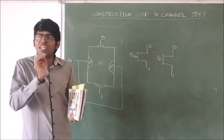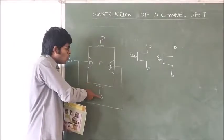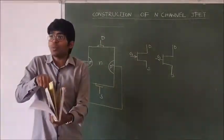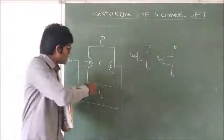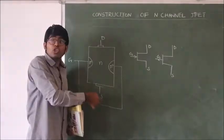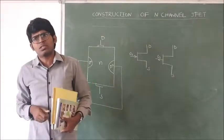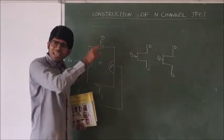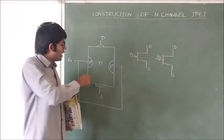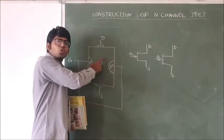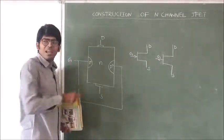This JFET has three terminals: source, drain, and gate. Source and drain terminals are taken from the same N-type semiconductor through ohmic contacts. In order to connect on a breadboard or wherever required, we take these terminals through ohmic contacts. The gate is the terminal taken out by joining the two P-plus regions together, and a common terminal from that junction is called the gate.